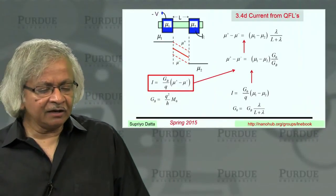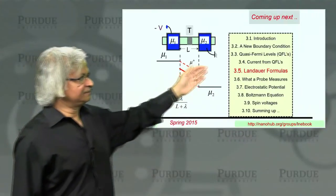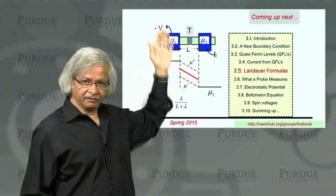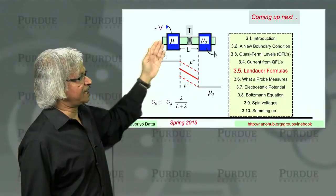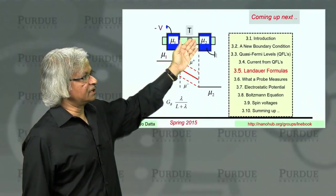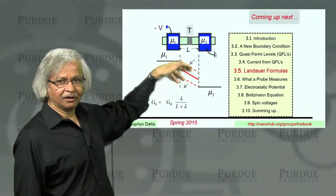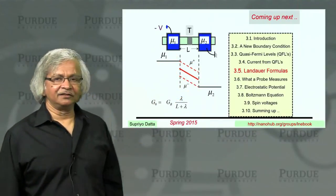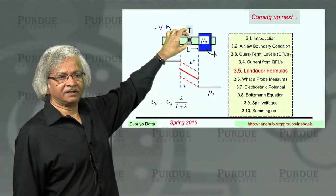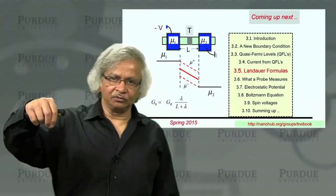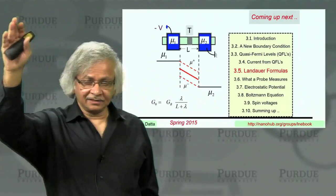That completes our discussion of this boundary condition. What we'll do next, in the next lecture, is talk about the Landauer formulas, which were historically very important in developing this whole point of view. So far, we have been discussing a channel with continuous scattering processes everywhere — cars continually turning around as they go along the highway. For the Landauer formula, we'll consider a slightly different situation: a channel that is largely ballistic but with a localized scatterer somewhere, like a construction zone or a toll booth in the middle of the highway. That helps clarify certain things. Thank you.